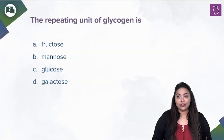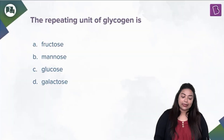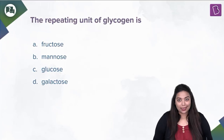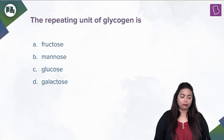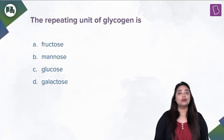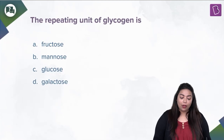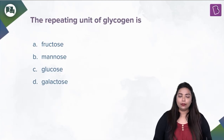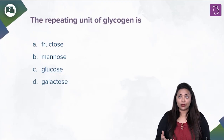Here's another question. The repeating unit of glycogen is: A. Fructose, B. Mannose, C. Glucose, or D. Galactose. Now, what is glycogen? It is the stored food found in animal tissues.